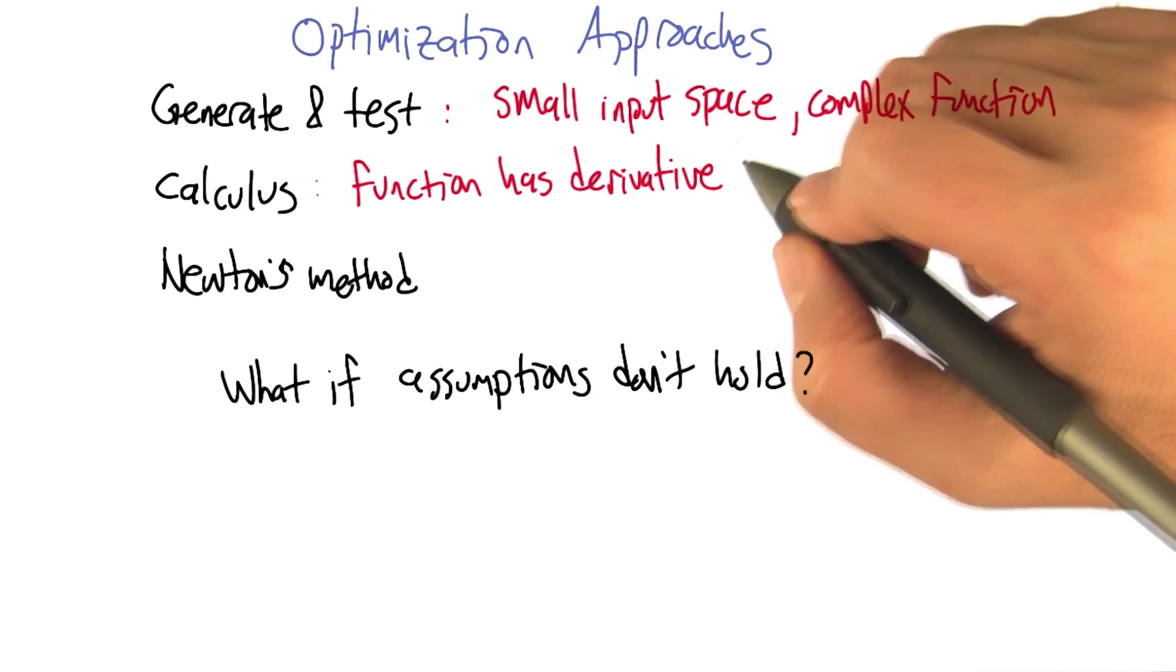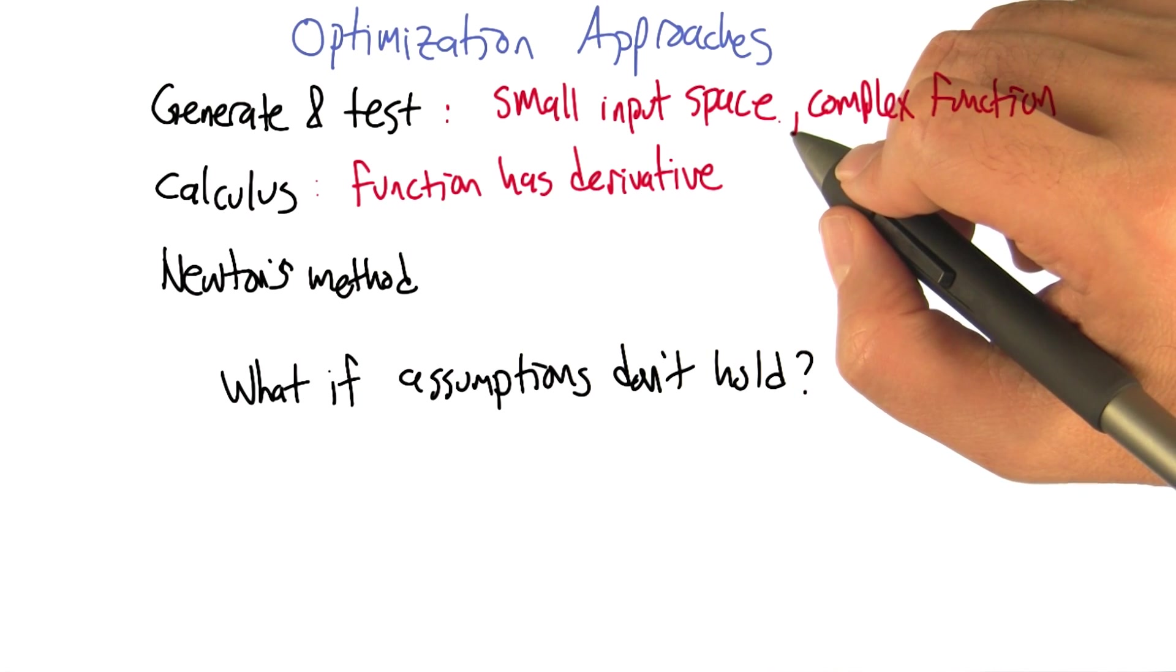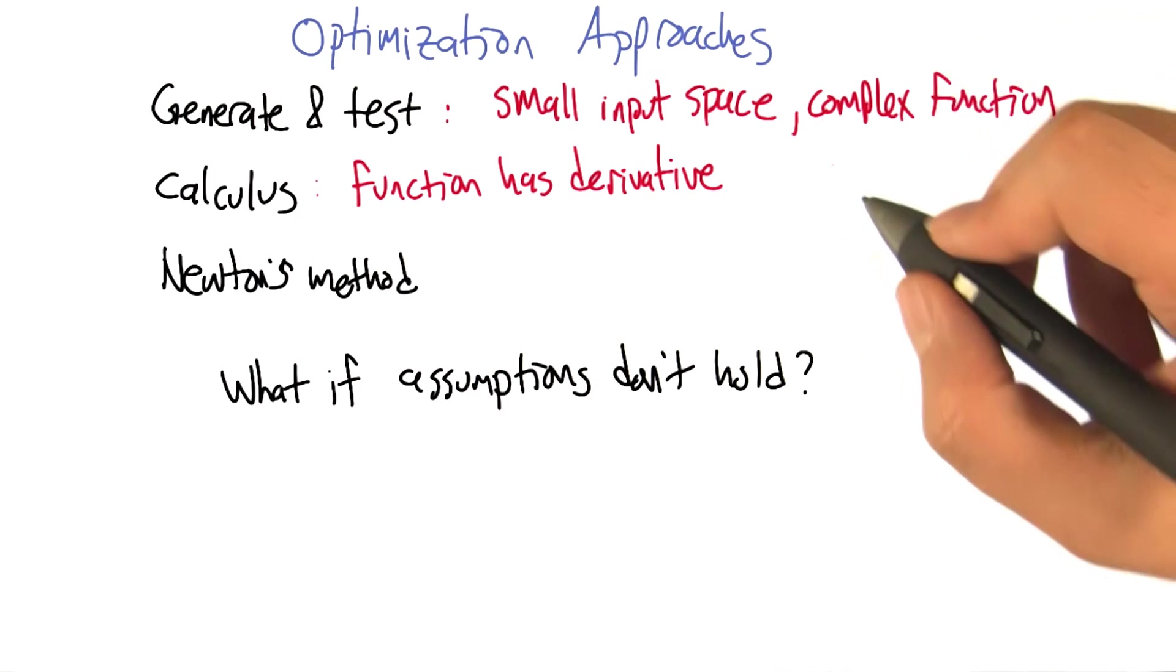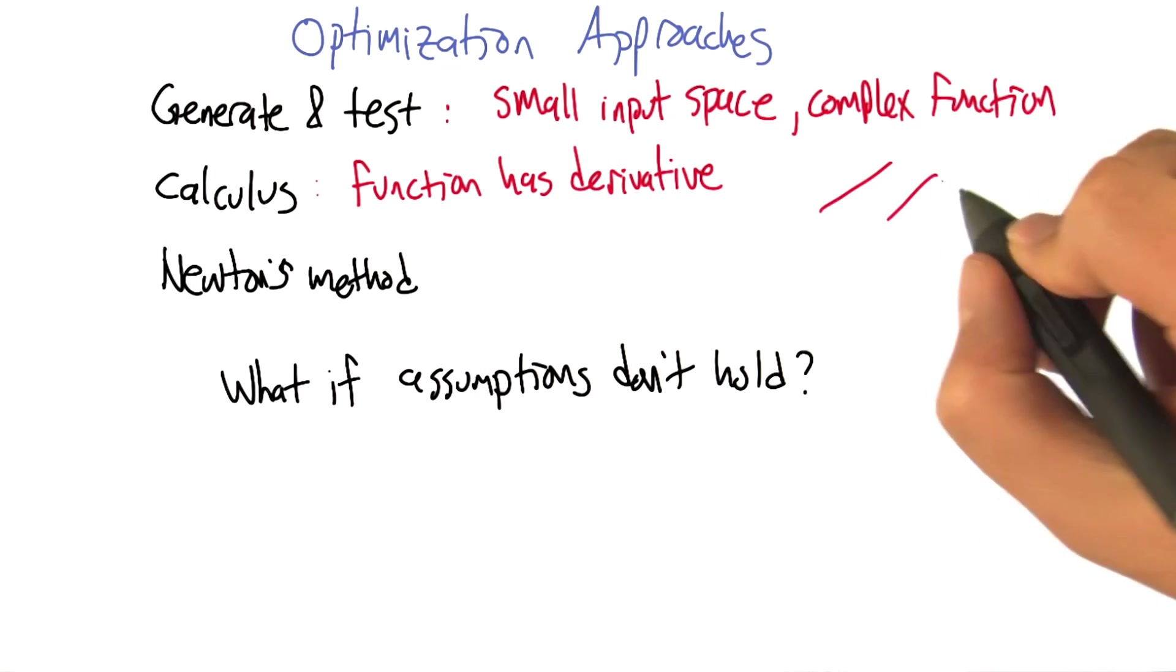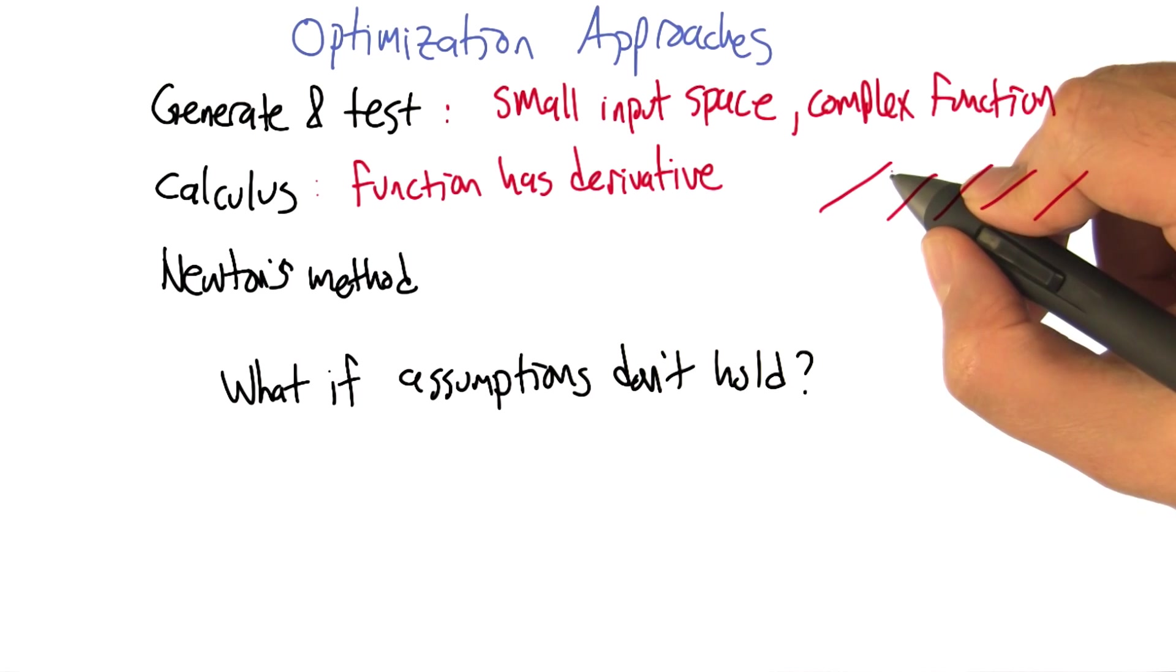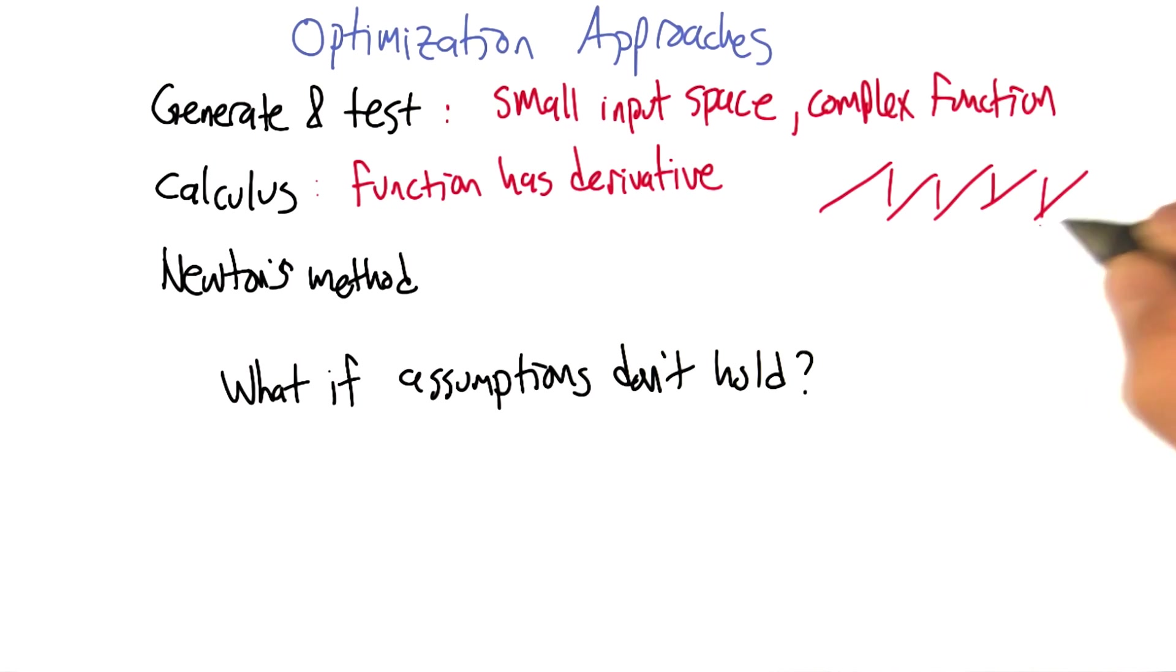Hey, does mod have a derivative? Almost everywhere. Just not everywhere. Yeah, because mod kind of looks like... So it has this nice derivative everywhere except at the jumps. Which happen pretty often. Yeah, there's a lot of them, but they're measure zero.